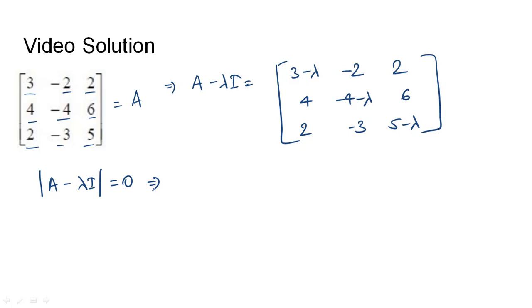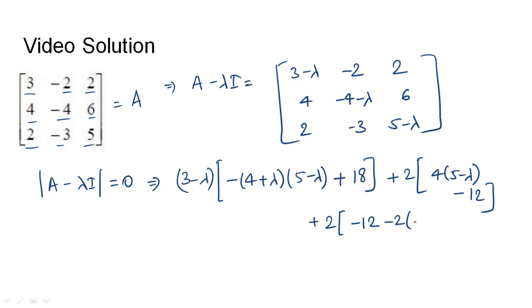We will expand the determinant. That becomes (3 - lambda) times [-(4 + lambda)(5 - lambda) - (-18)], which is plus 18, plus 2 times [4(5 - lambda) - 12], plus 2 times [-12 - 2(-4 - lambda)]. On solving this, the values turn out to be -(lambda - 2)(lambda - 1)² = 0.